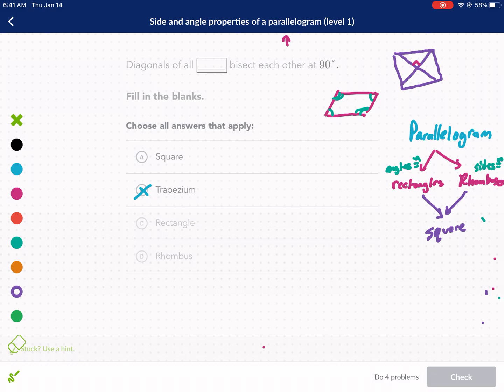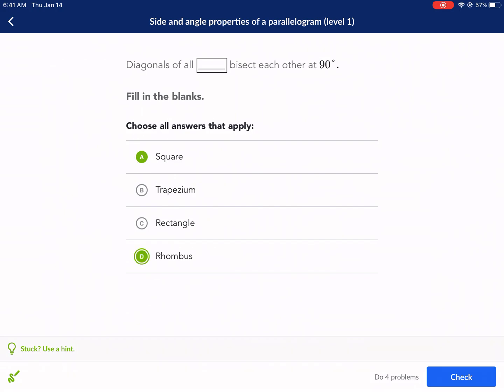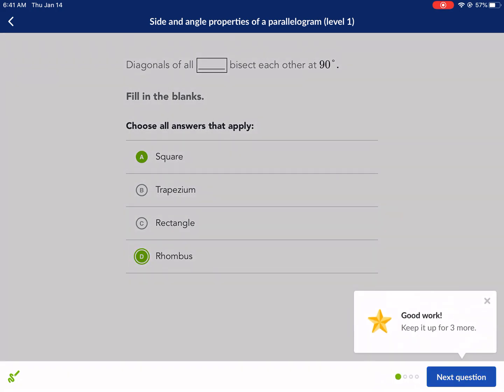Now, diagonals bisect each other at 90 degrees. That is a property of a rhombus. So this bisect each other at 90 degrees. That is a property of a rhombus. And because it's a property of a rhombus, it's also a property of a square. So the answer here is square and rhombus, because square is like the child of the rhombus. He has everything the rhombus has.